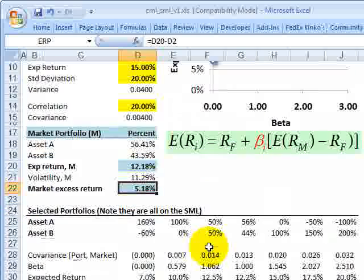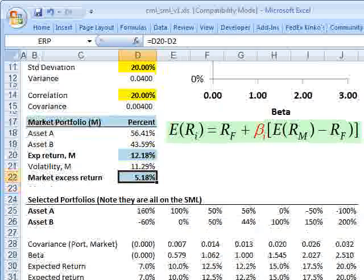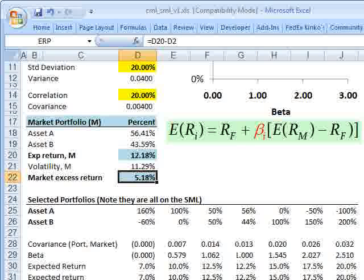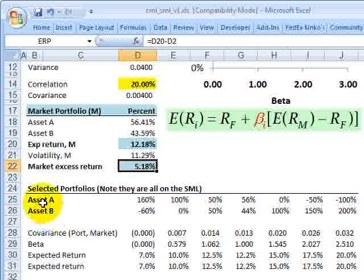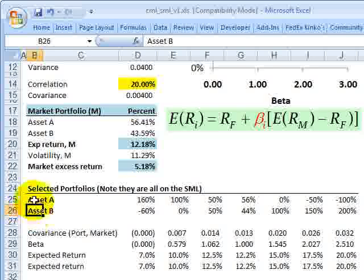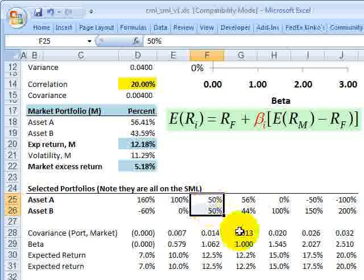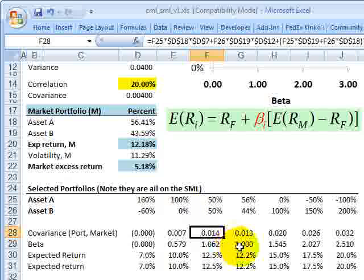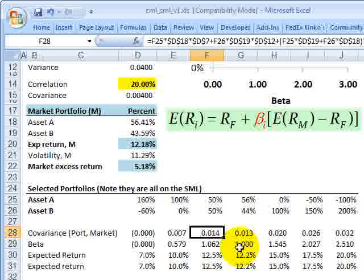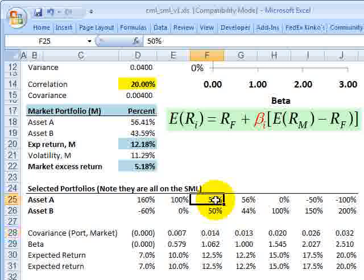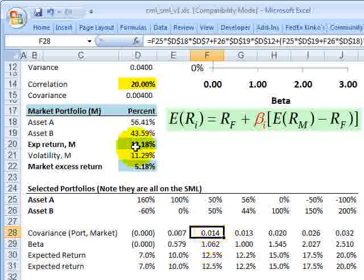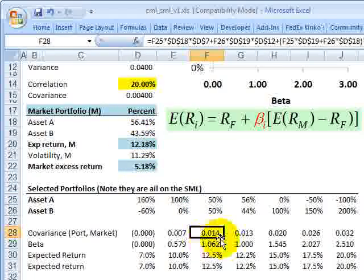So down below on the spreadsheet, which is uploaded to the member page, are more of the manual calculations to illustrate some different portfolios. These are portfolios now not of a single security, but of combinations of asset A and B. So for example, here's a portfolio that consists of 50% of asset A and 50% of asset B. And here's the covariance of that portfolio to the market portfolio. Again, the covariance of this portfolio that's 50-50 to this market portfolio.